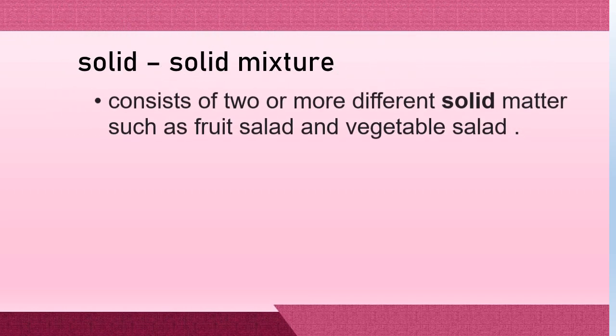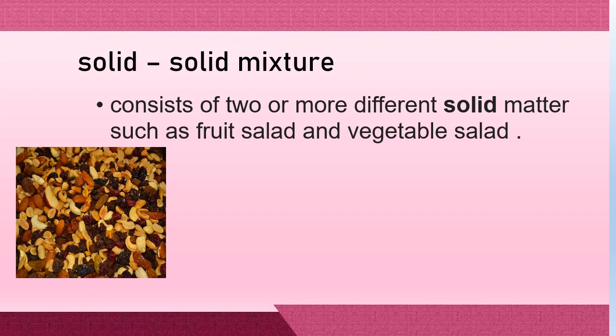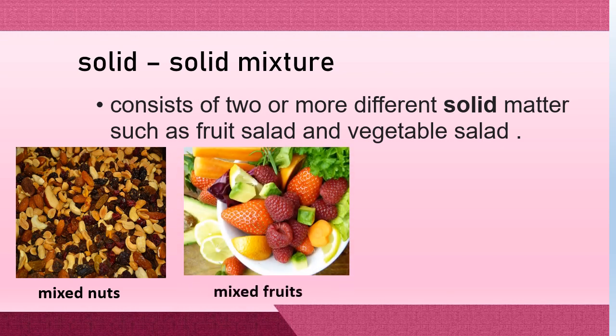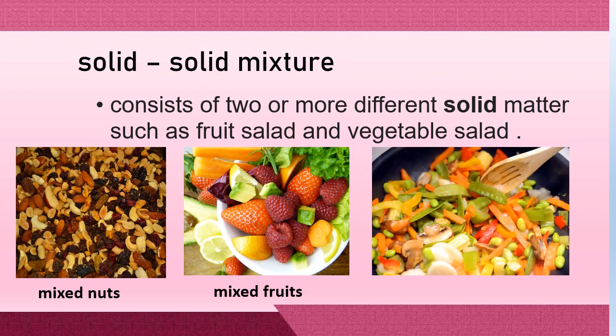A mixture can be a combination of different kinds of solids, and they are called solid-solid mixtures. So here are the examples: mixed nuts, a combination of different kinds of nuts such as peanuts, almonds, and cashew nuts; mixed fruits, a combination of different kinds of fruits; and mixed vegetables, a combination of different kinds of vegetables. As you can see in these examples, they are all solids mixed together.